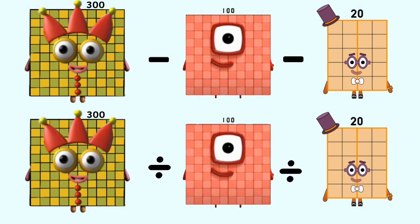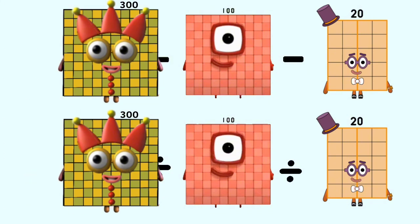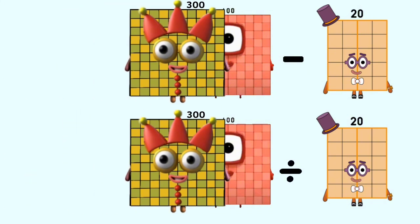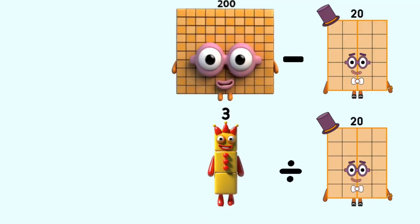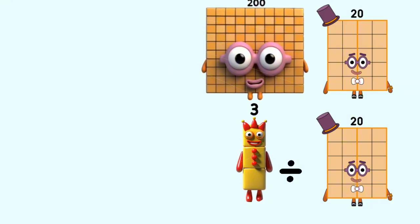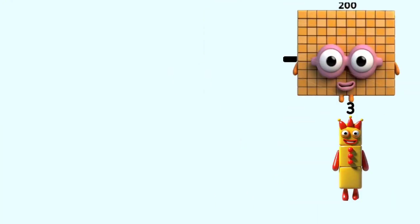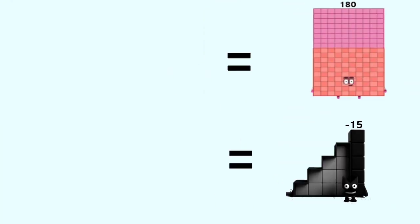Number blocks 300 minus 100 and divided by 100 equal 200 and 3. Number blocks 200 and 3 minus 20 and divided by 20 equal 180 and negative 15.